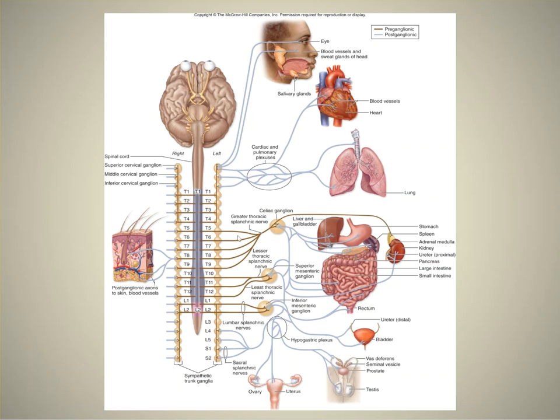There's another route where the preganglionic fiber goes to what's called a collateral ganglion, and that's where in some cases the postganglionic cell body is located. There's also another route that goes to the adrenal medulla where there is essentially no postganglionic axon — the adrenal medulla cells are modified nerve cells without axons, essentially postganglionic nerve cells without an axon.